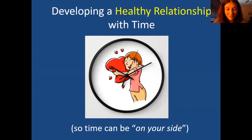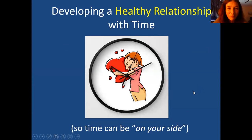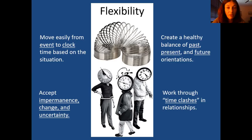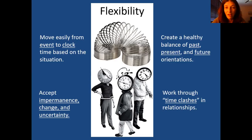So, developing a healthy relationship with time. Flexibility is always associated with health — we want to be flexible moving between event time and clock time. In social situations, go more event time; when you need a tighter schedule, switch to clock time. With time comes the acceptance that things are always changing, nothing stays the same, and the future is uncertain. So working on acceptance and flexibility helps our time orientation. Creating a healthy balance of past, present, and future orientations is key — there are good things about all of them.